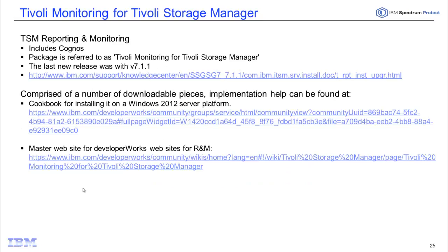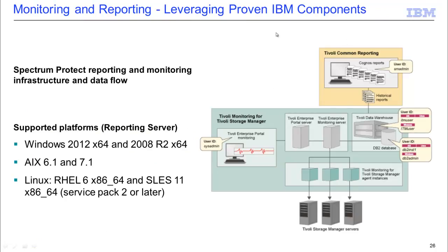Another product we have is Tivoli Monitoring for Tivoli Storage Manager. This reporting and monitoring piece includes Cognos. The last release this was updated in is version 7.1.1, and it is comprised of a number of downloadable pieces. The licensing is included with your Spectrum Protect server license. For monitoring, I recommend you use the Operations Center. Where this product excels is if you're looking for historical reporting longer than the two weeks that the Operations Center currently provides.